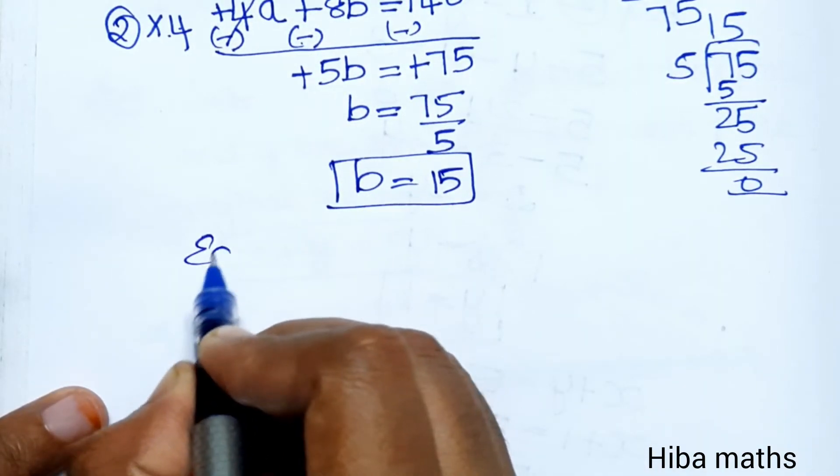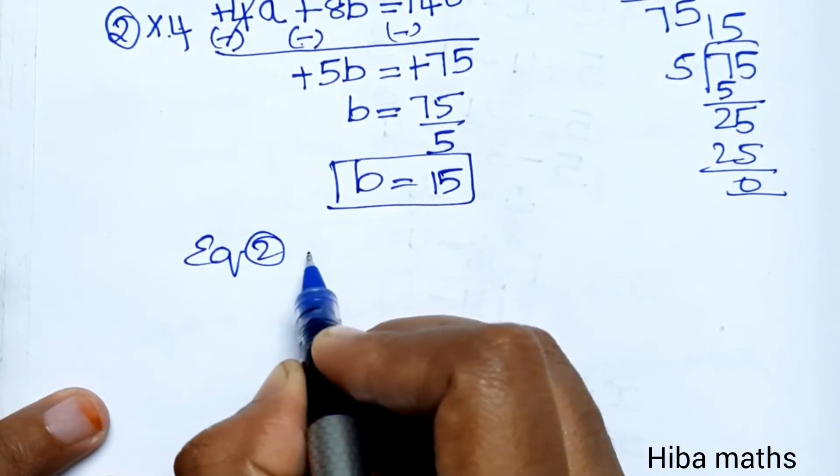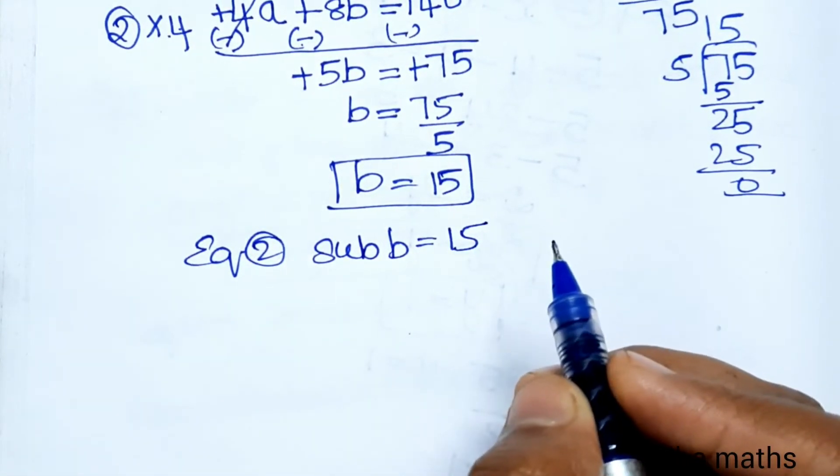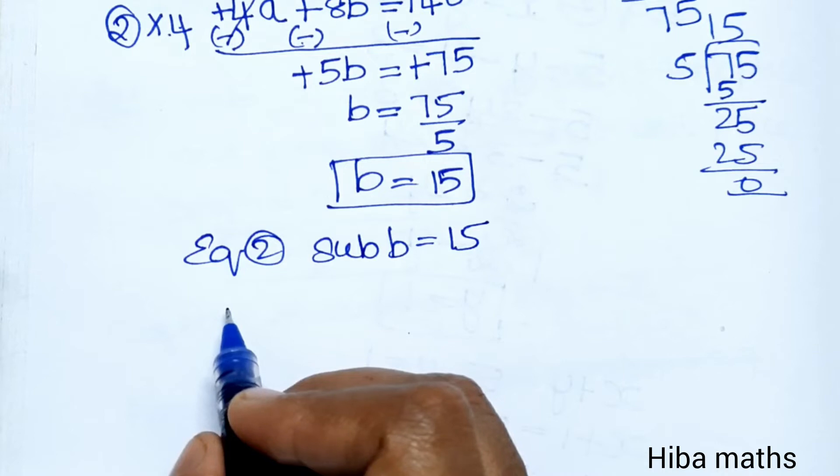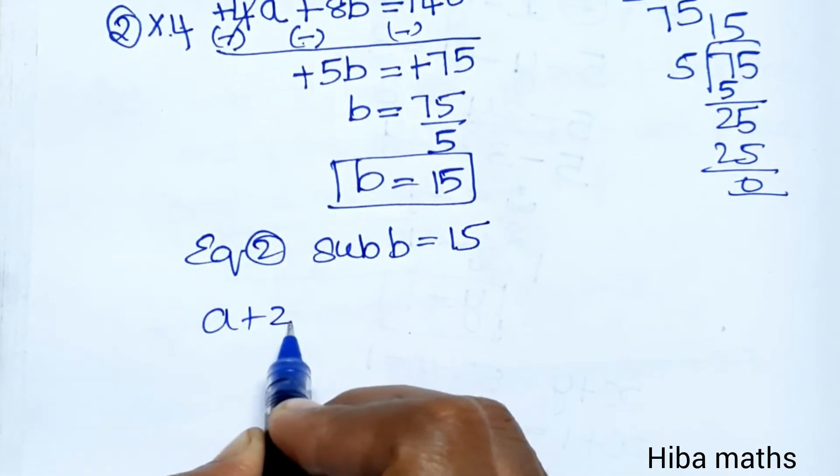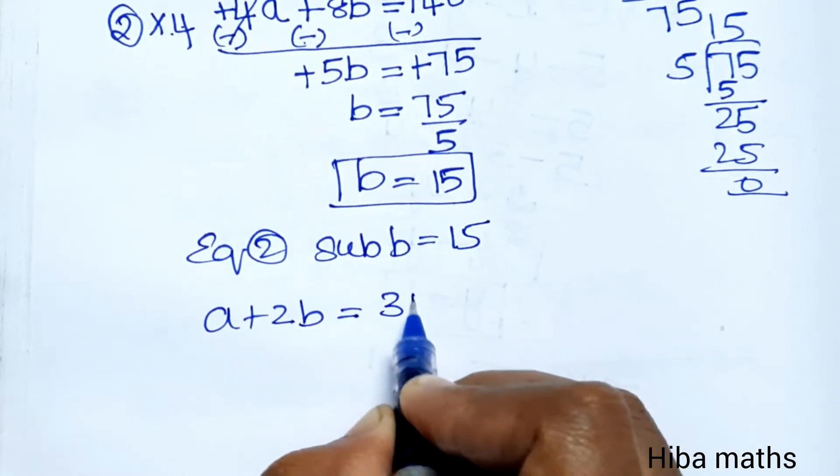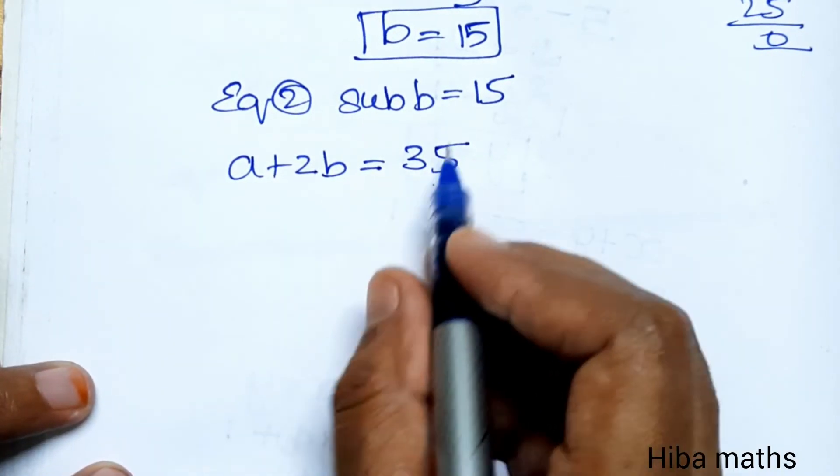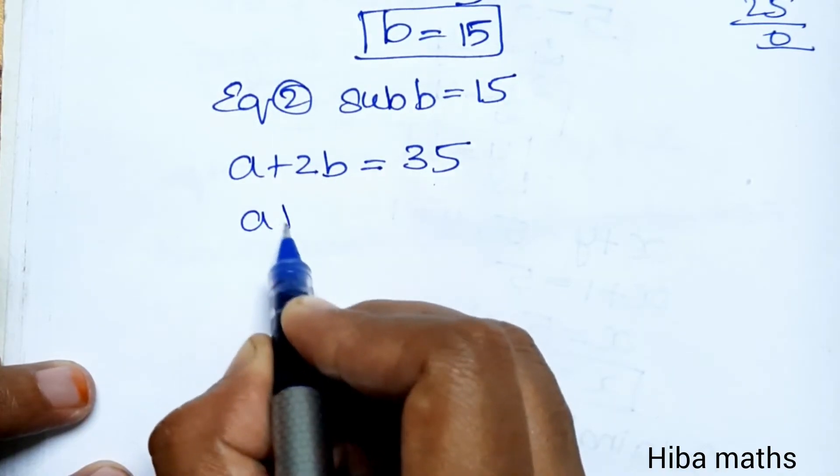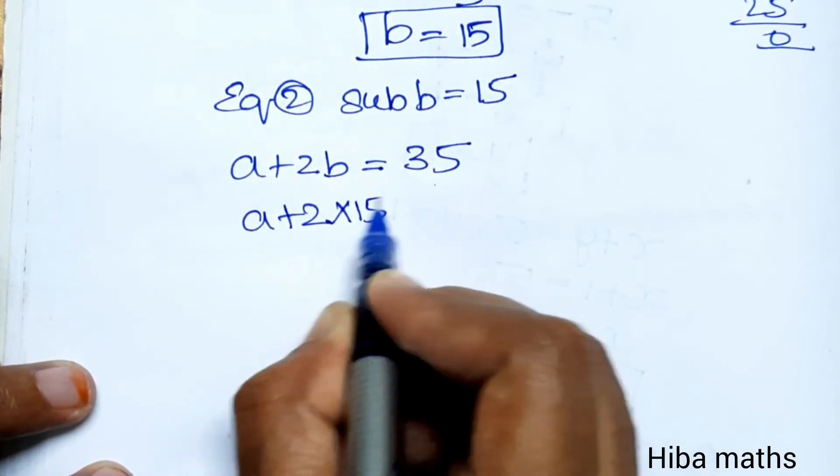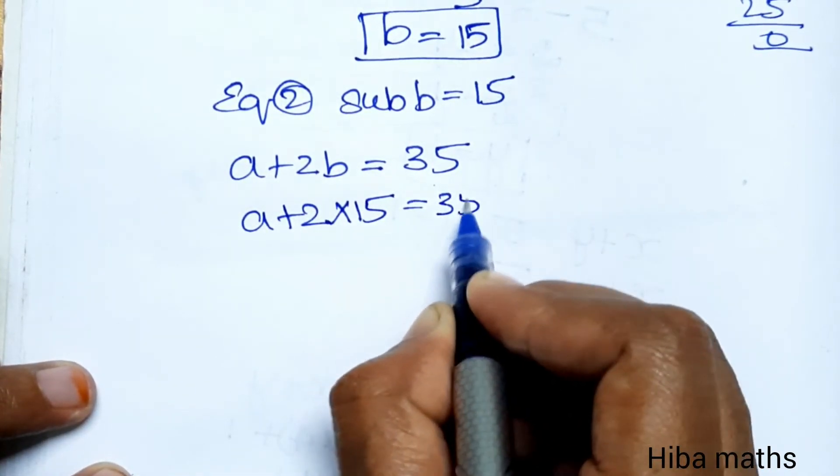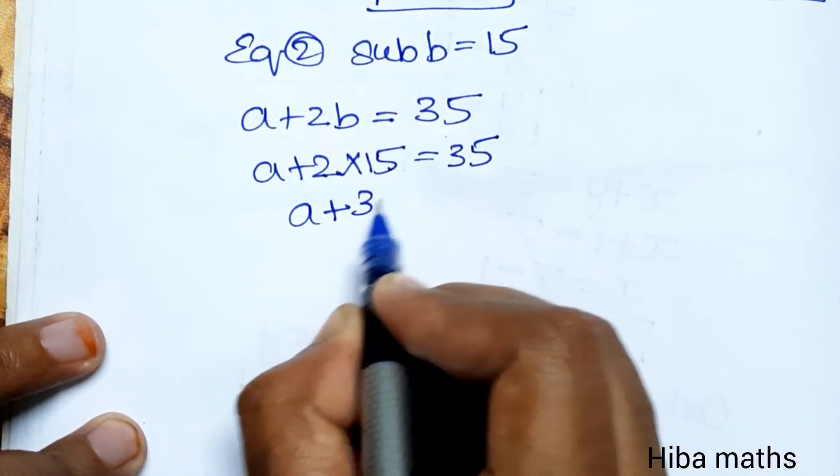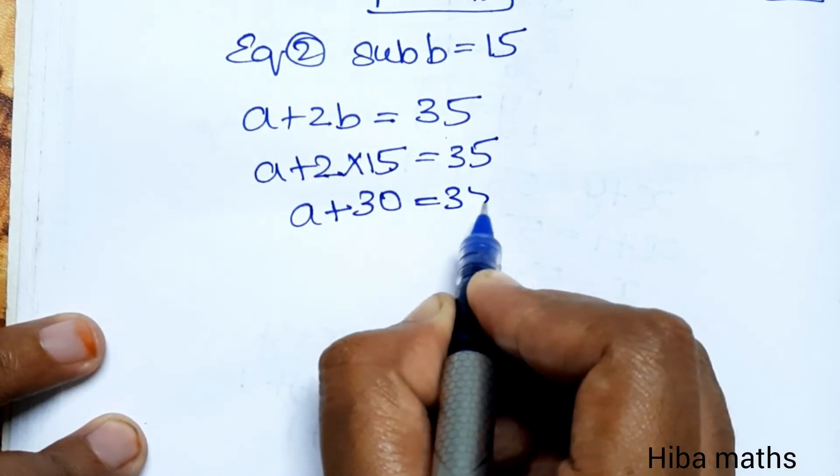Now substitute b equals 15 into equation 2. It will be easier. a plus 2b equals 35. Substituting b equals 15: a plus 2 times 15 equals 35, so a plus 30 equals 35.